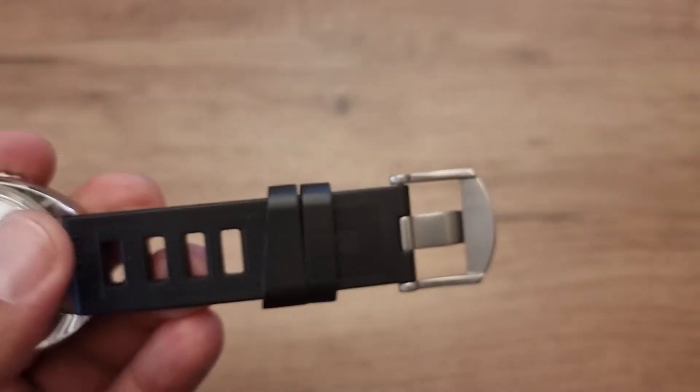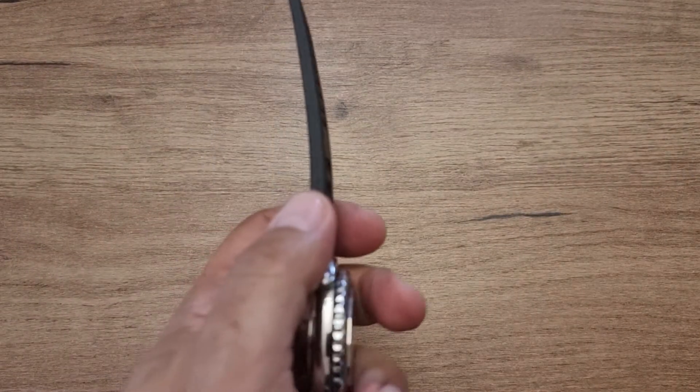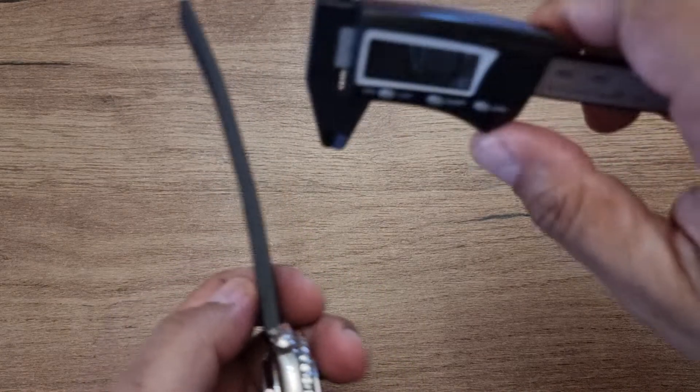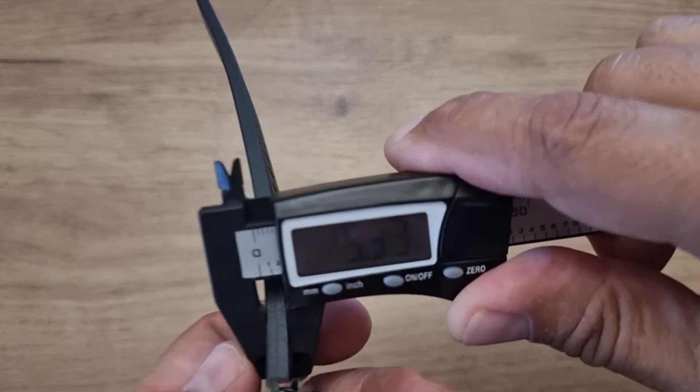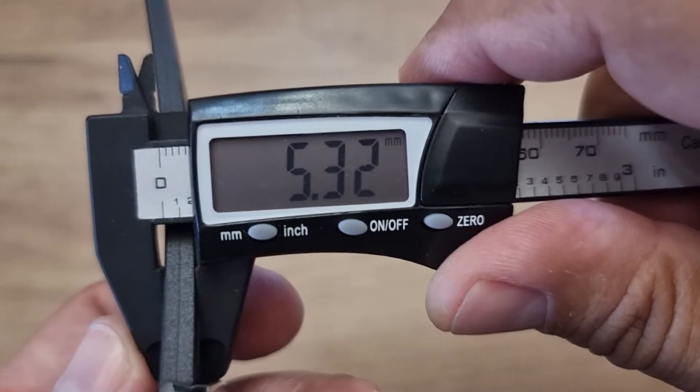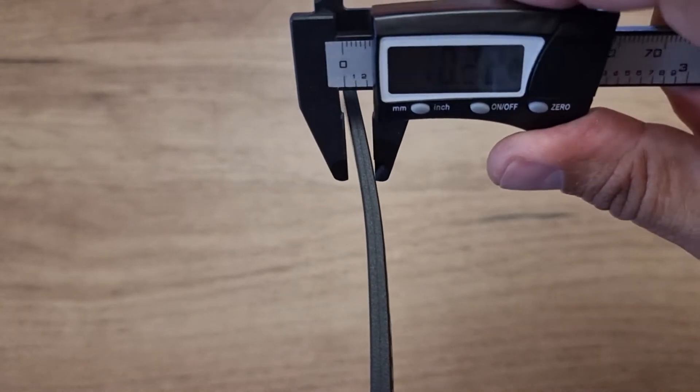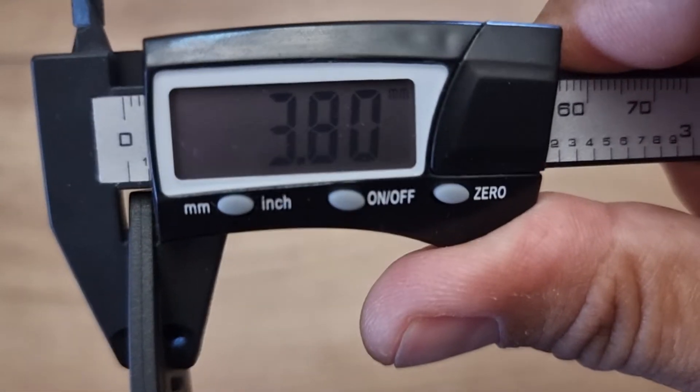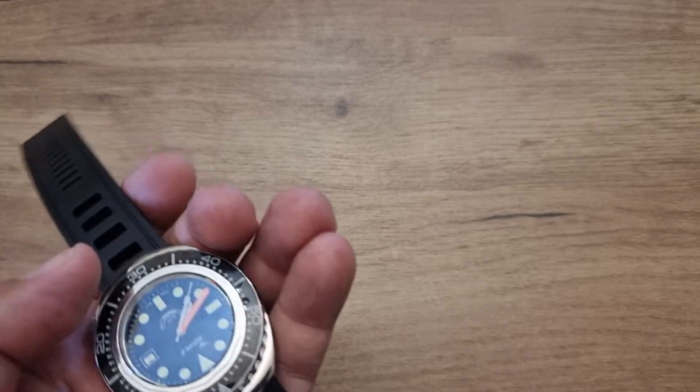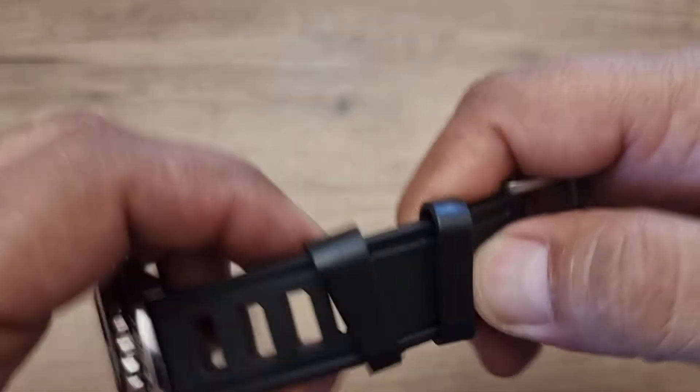Now the thickness close to the lugs is 5.3 and close to the tail 3.8. As you can see, it has two keepers.